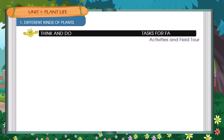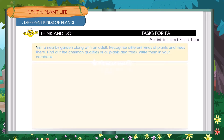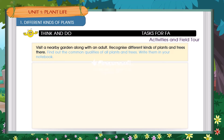Think and do. Visit a nearby garden along with an adult. Recognize different kinds of plants and trees there. Find out the common qualities of all plants and trees. Write them in your notebook.